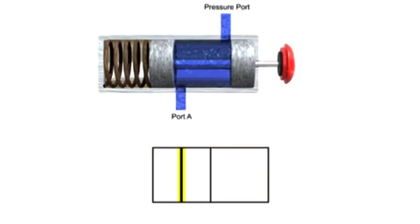Continuous lines are used to indicate fluid flow between ports. For complex valves, the ports may also be labeled. The input port is typically labeled P for pressure. Outlet ports are typically given alpha characters starting with A. Other times, the letter stands for the destination of the fluid — for instance, the letter T would indicate a port connected to a tank. This is a fairly simple valve, so port labels are not required.